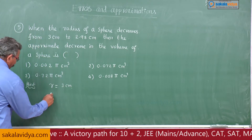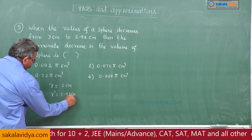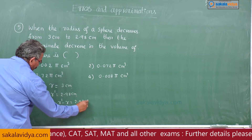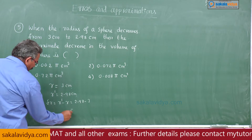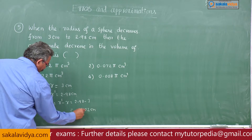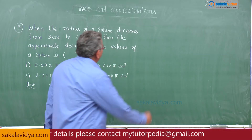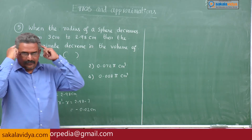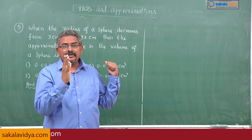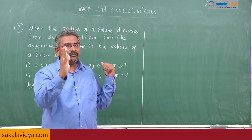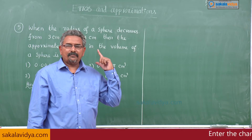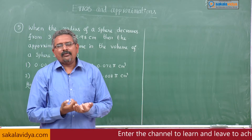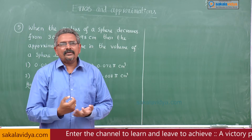r is equal to 3 centimeters, r dash is equal to 2.98 centimeters, and error in radius delta r is equal to 2.98 minus 3, which is minus 0.02 centimeters. Now we recall the formula for the volume of a sphere — we discussed it in the introduction part, which is very important.